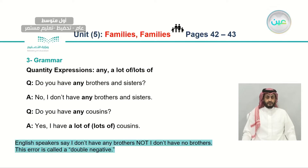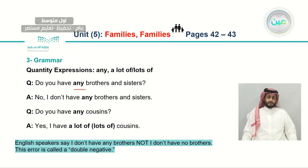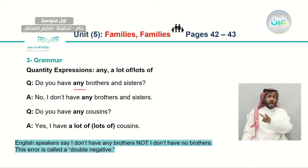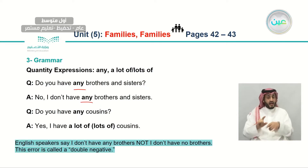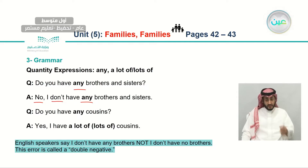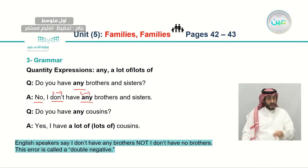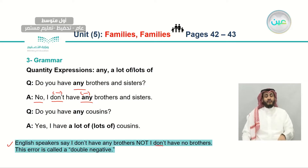Let's look at quantity expressions: 'any,' 'a lot of,' or 'lots of.' For example: Do you have any brothers and sisters? I'm not sure if you have brothers or sisters, so I'm asking. The answer could be: No, I don't have any brothers and sisters. Notice: in English, we avoid double negatives. English speakers say 'I don't have any brothers,' not 'I don't have no brothers.' That's totally wrong — this error is called a double negative.